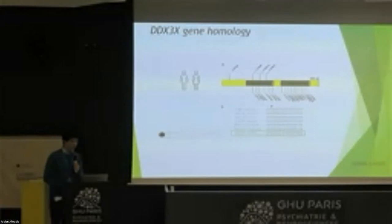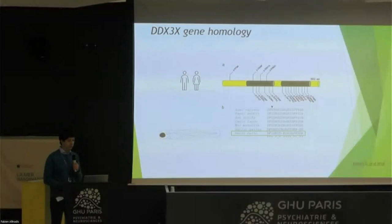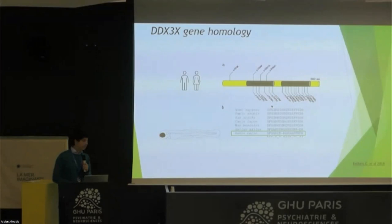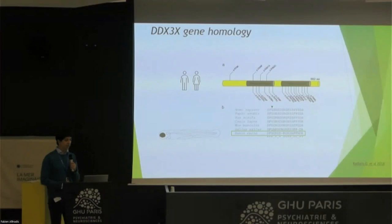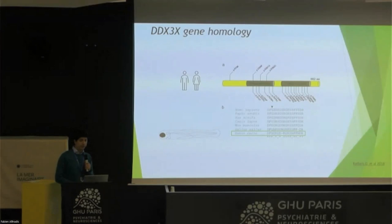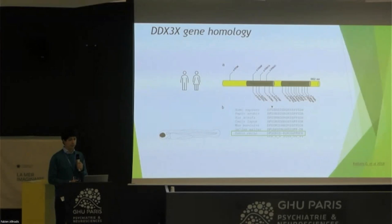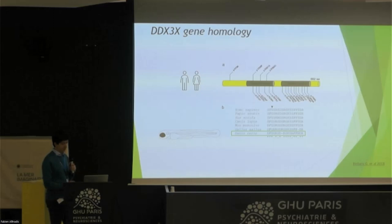The only thing we need to consider when working with fish is that there are usually multiple copies of the same gene that can have the same effect. So in our case, we are inducing a knockout — blocking the protein in both forms that they have — essentially eliminating DDX3X in the fish.